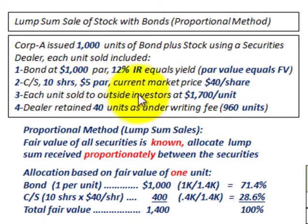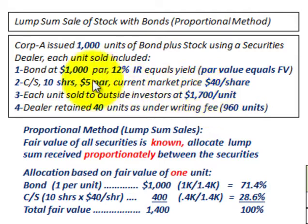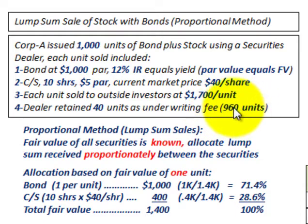Each unit is sold to outside investors at $1,700 per unit. So Corp A is selling 10 shares of common stock at $40 per share plus one bond at $1,000 par value. For this deal, the dealer is going to retain 40 units as an underwriting fee, so Corp A is only going to receive receipts for 960 units sold.